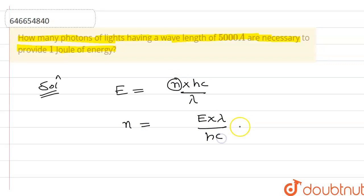E is 1 joule. We have to put the value of lambda. Lambda is 5000 Angstrom, which is 5000 times 10 to the power minus 10 meters.